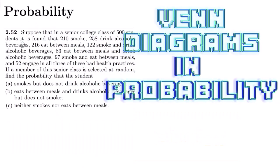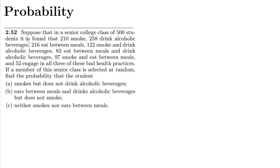Hello guys, this is question 2.52. The statement is: suppose that in a senior college class of 500 students, it is found that 210 smoke, 258 drink alcoholic beverages, 216 eat between meals, 122 smoke and drink alcoholic beverages, 83 eat between meals and drink alcoholic beverages, 97 smoke and eat between meals, and 52 engage in all three of these bad health practices. If a member of this senior class is selected at random, find the probability.